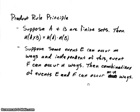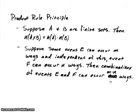The next rule is the product rule, which we've seen before also. Suppose A and B are finite sets. Then when we look at the product set A cross B, the total number of elements in A cross B is going to be the number of elements in A times the number of elements in B. Now in terms of experiments, suppose some event E can occur M ways, and independent of this, event F can occur N ways. In the experiment, we're going to do combinations of those E and F, and the total number of ways that we can have the outcomes would be M times N.